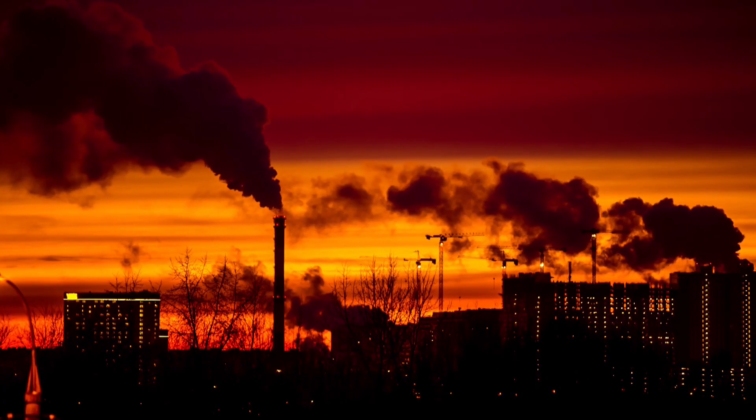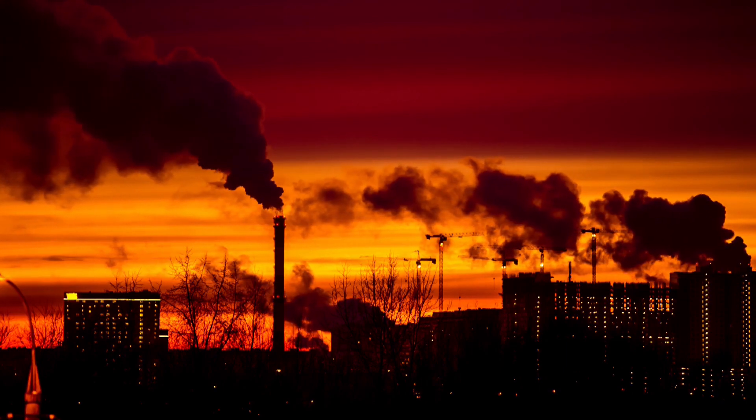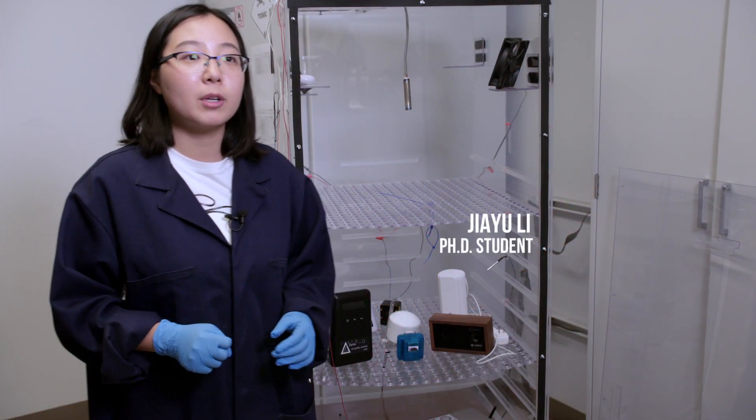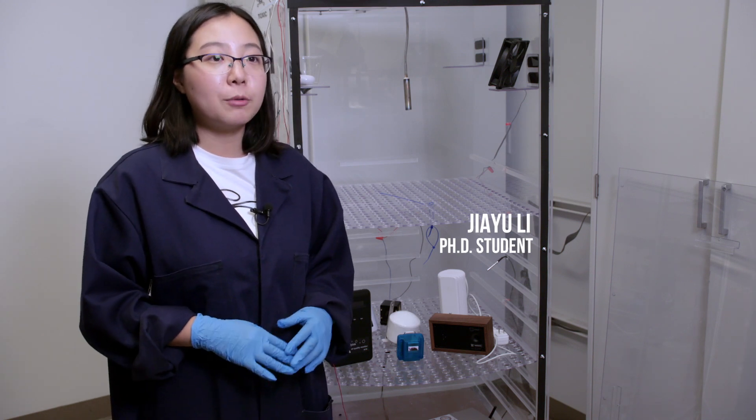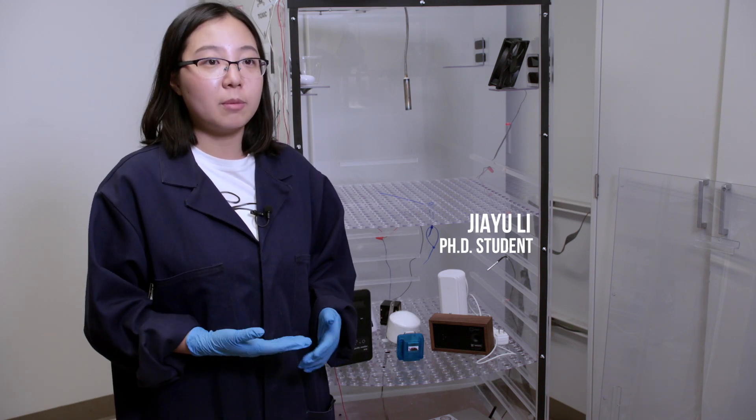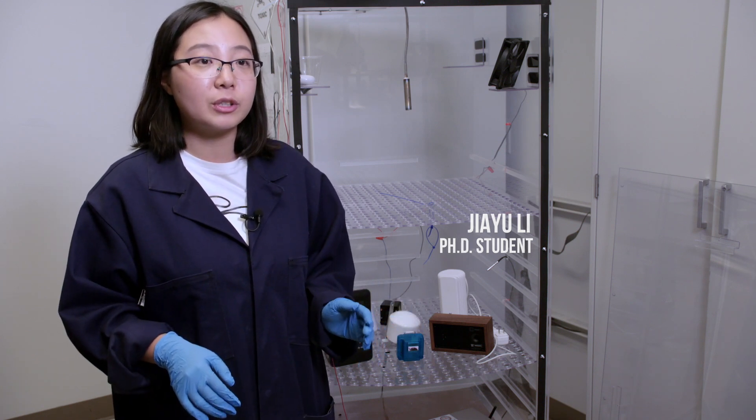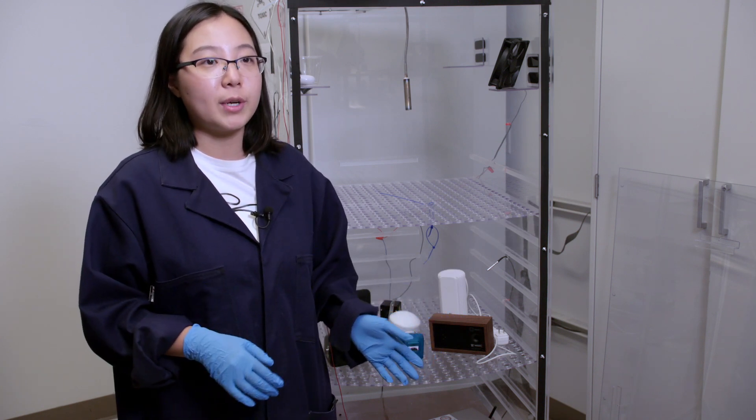Because right now the sensors have dependence on particle size and composition. And although these sensors have been pre-calibrated before they were distributed to users, there are still some limitations on them, which they may predict a biased PM concentration. And this is what we're trying to figure out. Why this happens and how can we fix them?